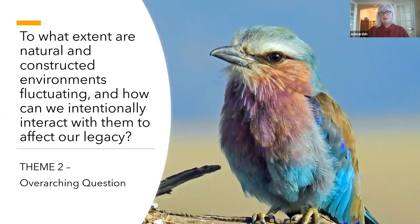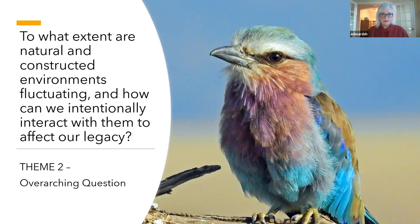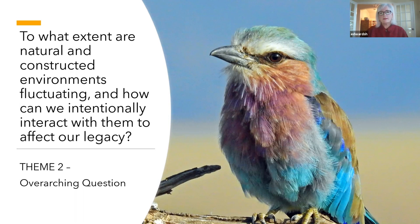When you look at a theme like Theme Two — natural and constructed environments — it's always with a lens looking at the Honor Study Topic. You're always going back to the seventh generation, the inheritance and legacy. The overarching question for Theme Two is: to what extent are natural and constructed environments fluctuating, and how can we intentionally interact with them to affect our legacy? Use that question to see if you're in the right theme.